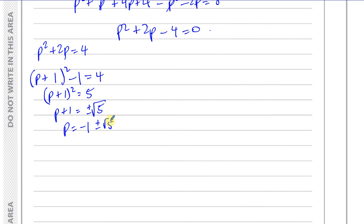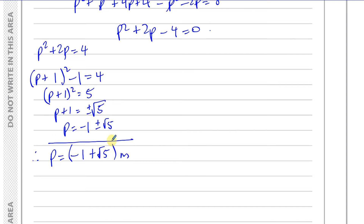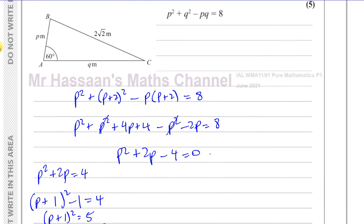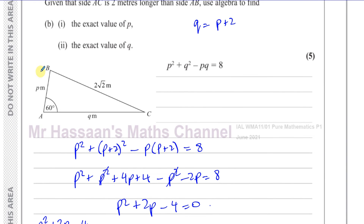Of course, P can't be negative because it's a length. So we only accept P equals minus 1 plus root 5. This is the value we accept — we don't write the negative solution because P is a positive length. And then we can find Q, which is equal to 2 plus P.